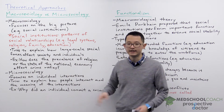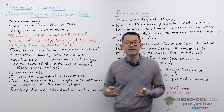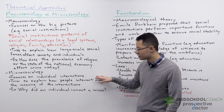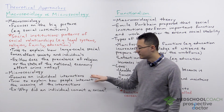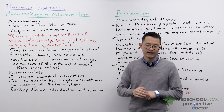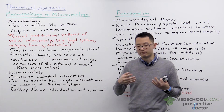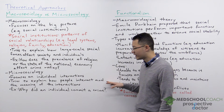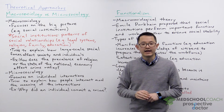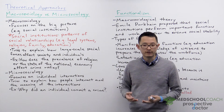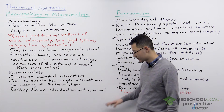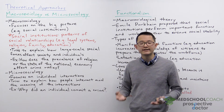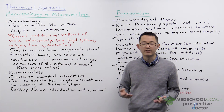Micro sociology is essentially the opposite of macro sociology. Instead of taking the big-picture view, micro sociologists focus on individual interactions. What micro sociologists try to do is explain how people interact as well as the meaning of those interactions. An example of a question that micro sociologists would ask is: why did an individual commit a crime?